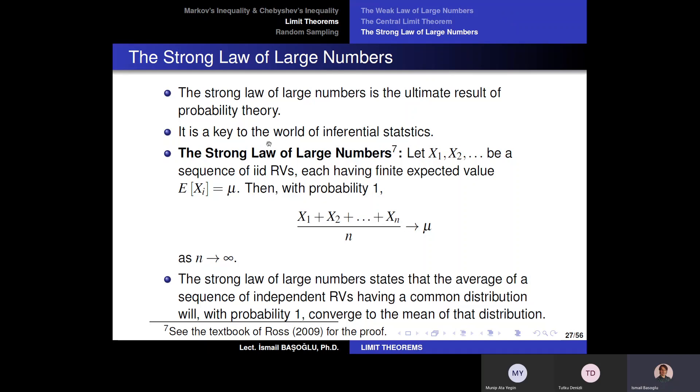Actually, I have mentioned this in the weak law of large numbers. This law is the key to the world of inferential statistics. This is the blue pill of statistics work, like in The Matrix, the pill that is given from Morpheus to Neo. The strong law of large numbers is the blue pill here.